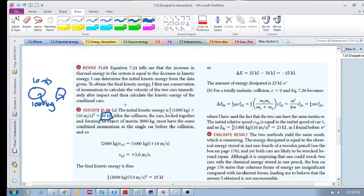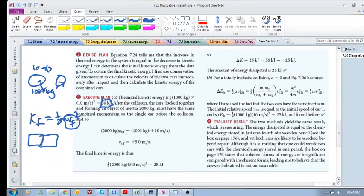Now we need to calculate K_final, which is also half mv_final squared. This v_final—they're both moving at the same speed, so we just have to calculate the speed of both of these cars moving at the same velocity now. How would we do that? Well, conservation of momentum: we had m1 v1 plus m2 v2, but that is equal to zero.